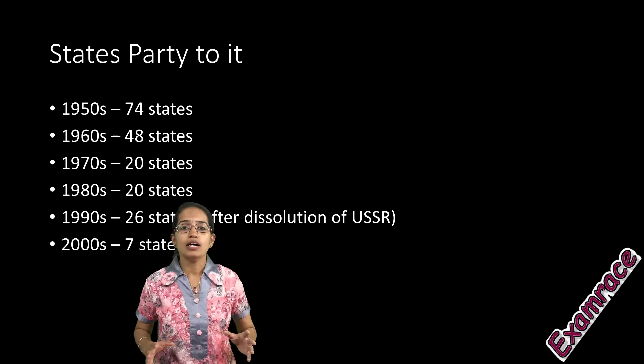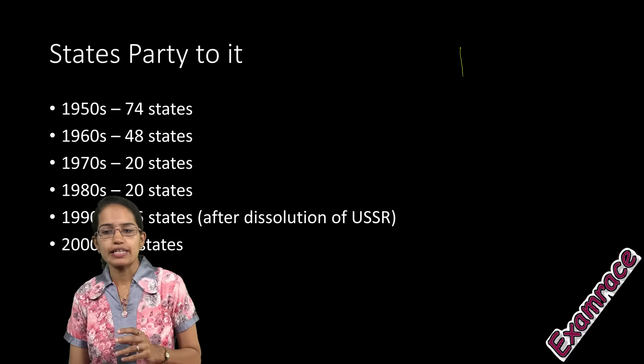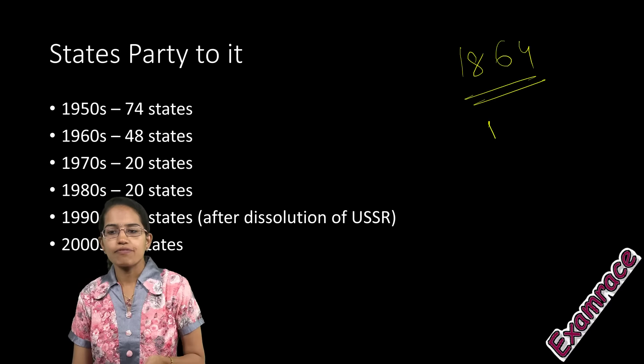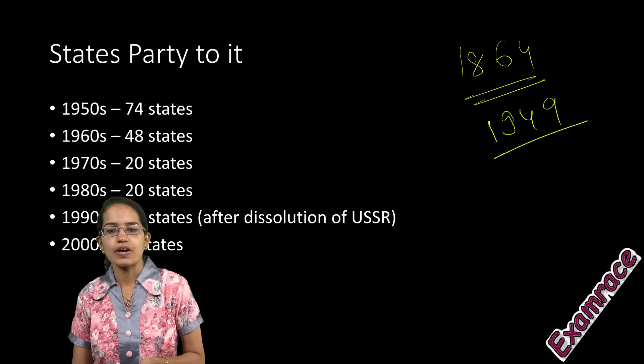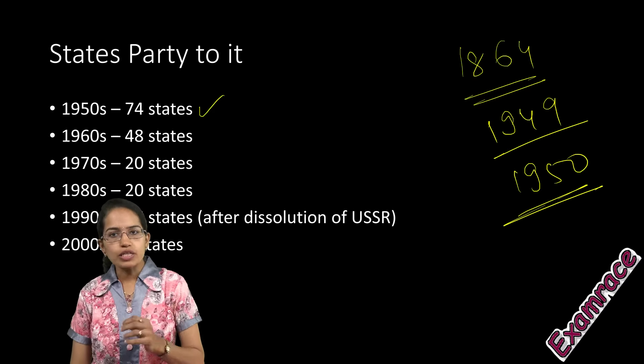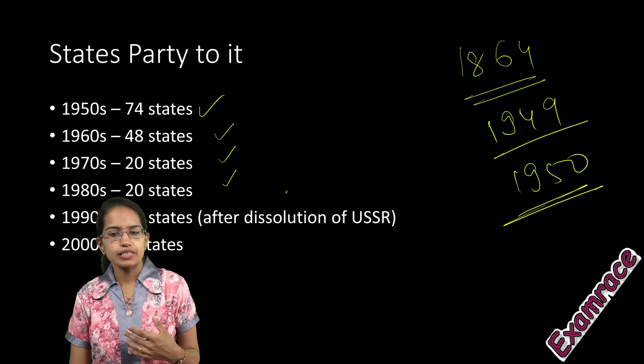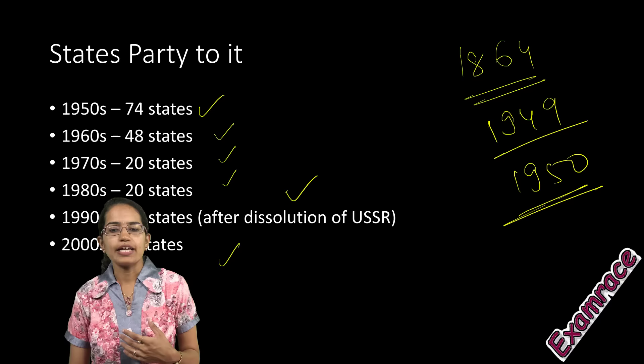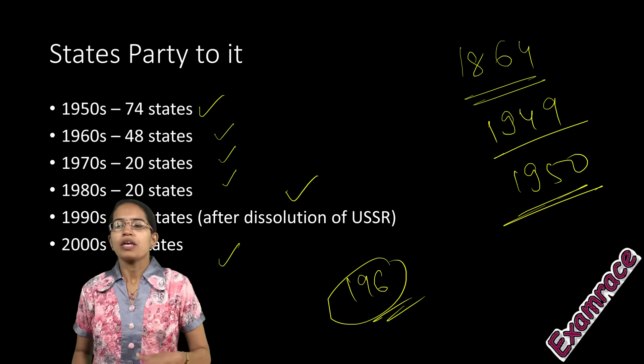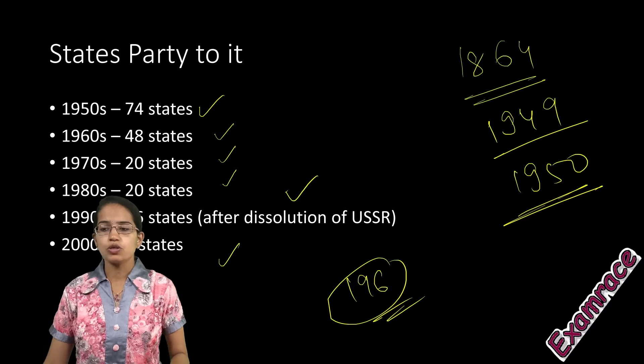The Geneva Convention started with ten articles back in 1864, was ratified in 1949, and came into force in the 1950s. During that time, 74 states were party to it. Later, other states joined during various decades, and as of now, 196 nations are party to it.